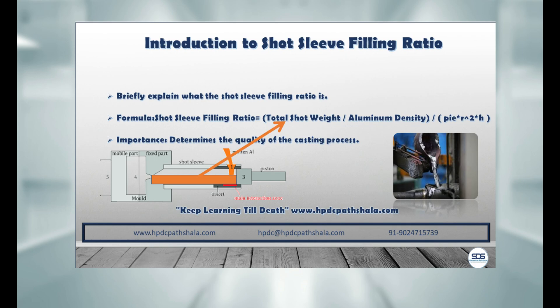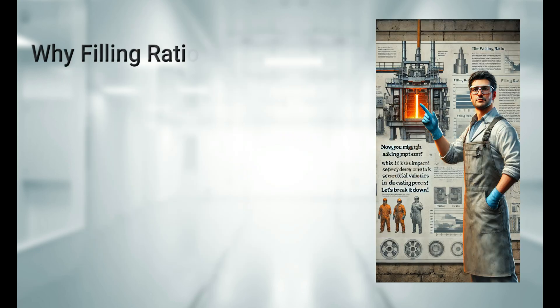The short sleeve filling ratio is the proportion of the molten metal that fills the short sleeve relative to its total volume. The formula uses total shot weight — the weight of molten metal required to fill the cavity including runner, riser, overflow, and cavity. Aluminum density is 2.6 g/cm³, R is the radius of the short sleeve or plunger diameter, and H is the length of the short sleeve minus the diffuser and plunger insert length, which most people call the distributor length.